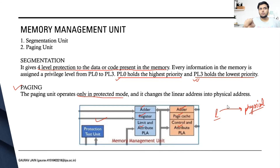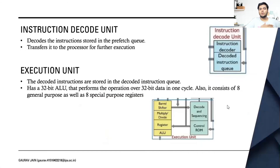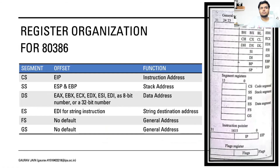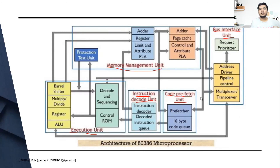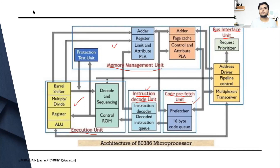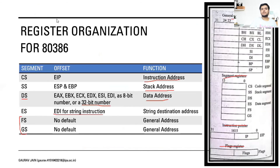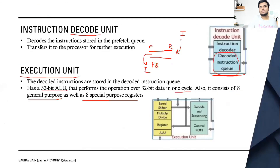Segmentation provides four levels of protection for data and memory code, and paging converts linear addresses into physical addresses. This was an overview of the memory management unit. Coming back to the main architecture diagram: we have the bus interface unit interfacing with the whole microprocessor and peripheral devices, the code prefetch unit to fetch instructions, the decode unit to decode them, the execution unit to execute them, and the memory management unit to interface with the memory. This was the whole 80386 microprocessor and its architecture.